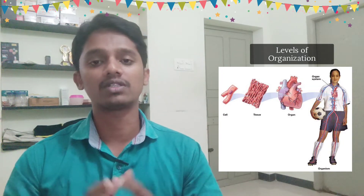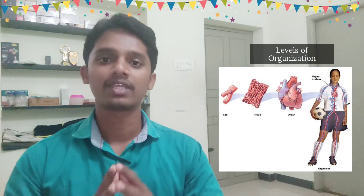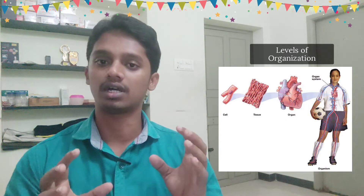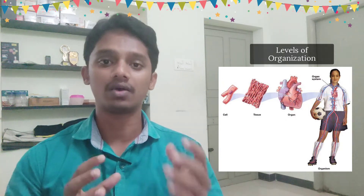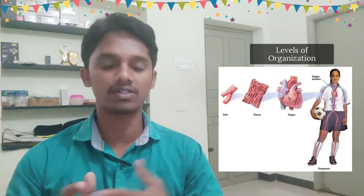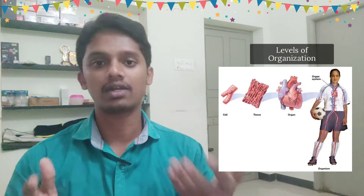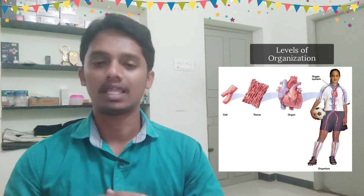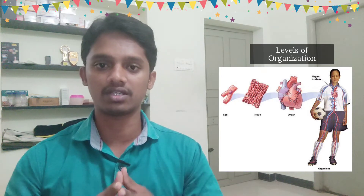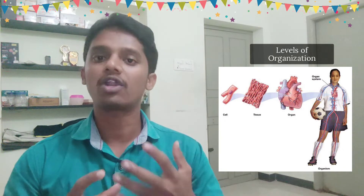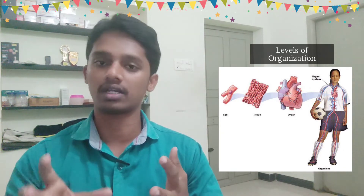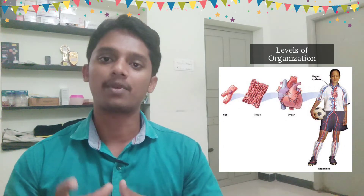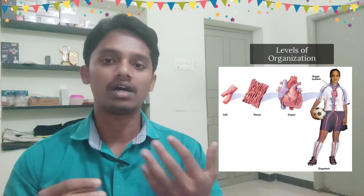Now let's look at the cells — their structure, their components, and how one cell connects to another. That is simply the anatomy and physiology of a cell: anatomy being the structure and components, and physiology being the function of one component to another.